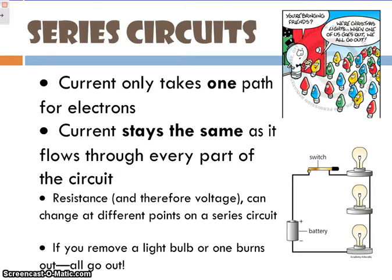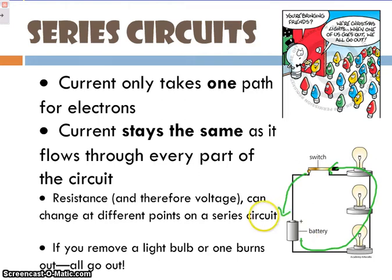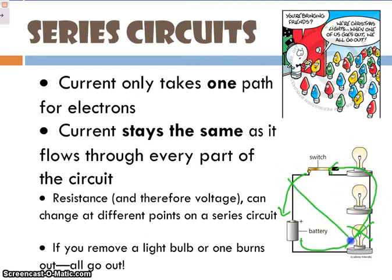In series circuits, current has one path — all the electrons have to go through. If we start here, they have to go through all of these and the switch and then return to the battery. That means if one of these light bulbs goes out, whether it be the first, middle, or last one in this series, then your entire series circuit is now broken. If you remove a light bulb or one goes out, they all go out.